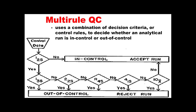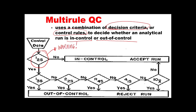Multi-rule QC uses a combination of decision criteria to decide whether an analytical run is in control or out of control. The 1-2S rule is the warning rule — if violated, examine carefully before proceeding. If additional control rule violations are then observed, stop and reject the run; you are out of control and should not report patient results. If only a single 1-2S violation occurs and nothing else, the run is considered in control. The n must be at least 2 to satisfy US CLIA QC requirements.